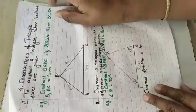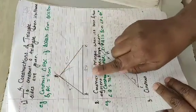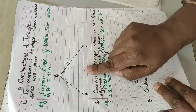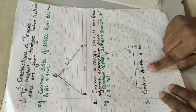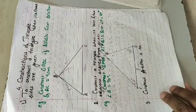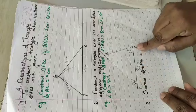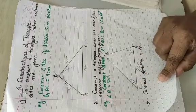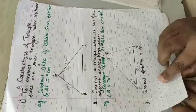The basic constructions we covered are: how to construct a triangle when its three sides are given, and second, how to construct a triangle when a base and the base angles, or two angles, are given.